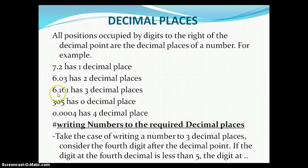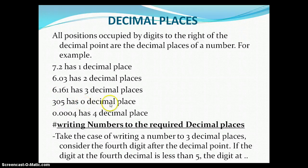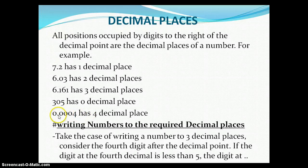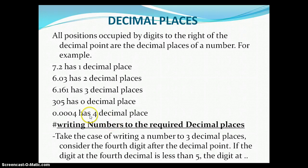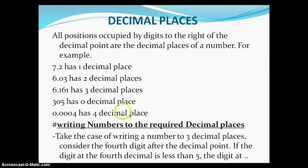Then we have 300 — we don't have a decimal point there, so we say that has zero decimal places. The last one: 0.0004 — after the decimal point those digits are zero, zero, zero, four. We have one, two, three, four digits, so we say this has four decimal places.